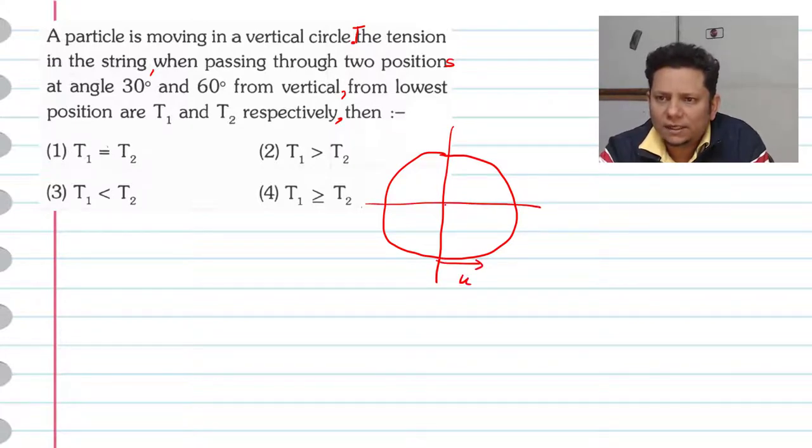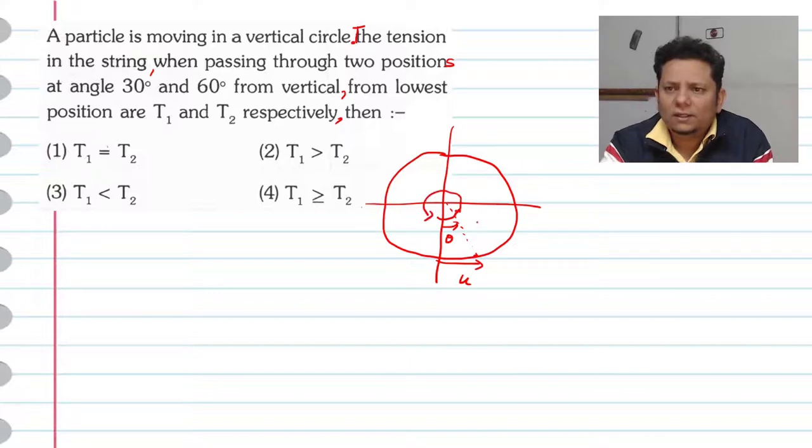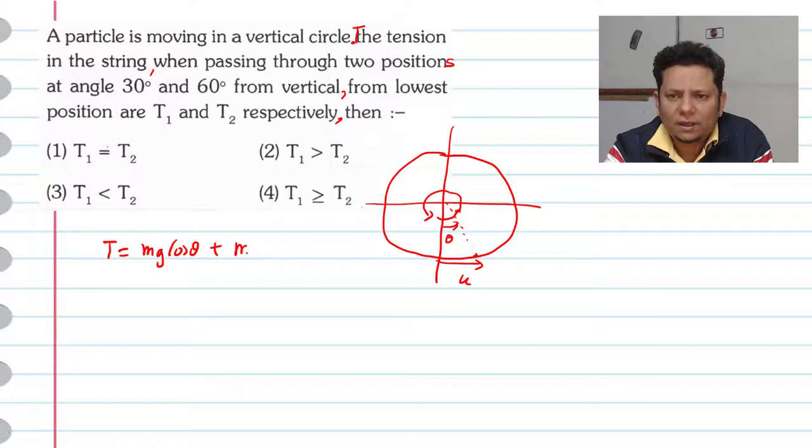You have to start with velocity at any angle theta during its motion. The particle is rotating and will come back. At this position, the tension we write will be equal to mg cos θ plus mv²/r.